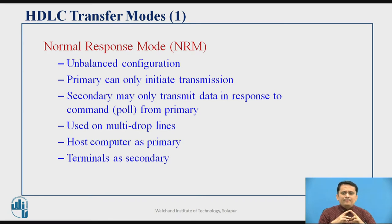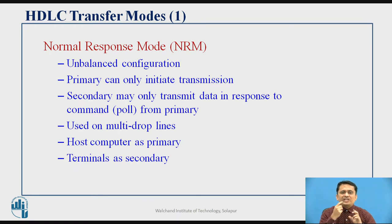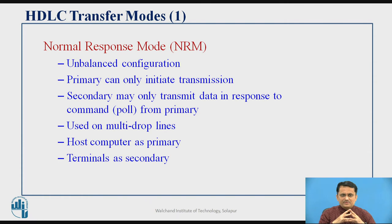Whenever you have a station, it may be operating in one of the modes. There are three important modes in HDLC. The first mode is Normal Response Mode (NRM). NRM corresponds to unbalanced configuration, where there is a primary station and one or more secondary stations. The primary station can only initiate transmission, and the secondary may only transmit responses to commands sent by the primary. NRM is used for multi-drop lines, where the host computer is the primary and other terminals are secondary stations.